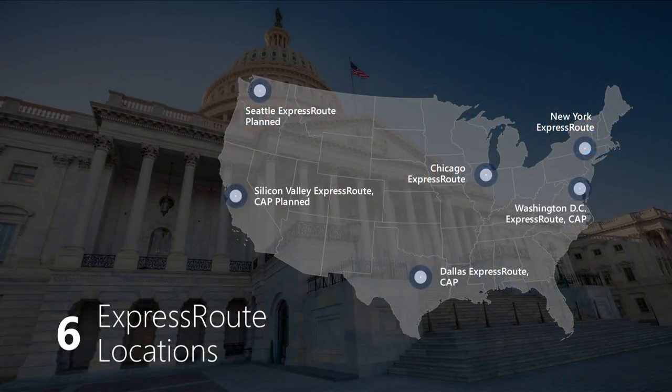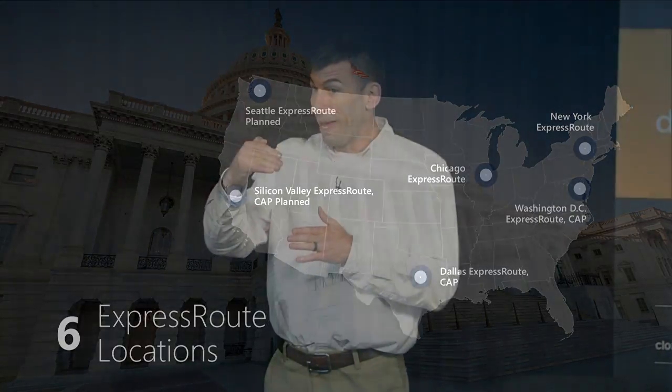In addition to our data centers, we also have six ExpressRoute locations. ExpressRoute is the technology that enables you to securely connect your on-premises data center to our cloud without going over the public internet. Our ExpressRoute locations, unlike some competitors, do not piggyback on any commercial cloud infrastructure — it's dedicated to government. We have our own fiber. ExpressRoute opens up hybrid scenarios, for example putting your web apps in the cloud while keeping your database on-premises, using a high-speed private connection between cloud and on-premises.